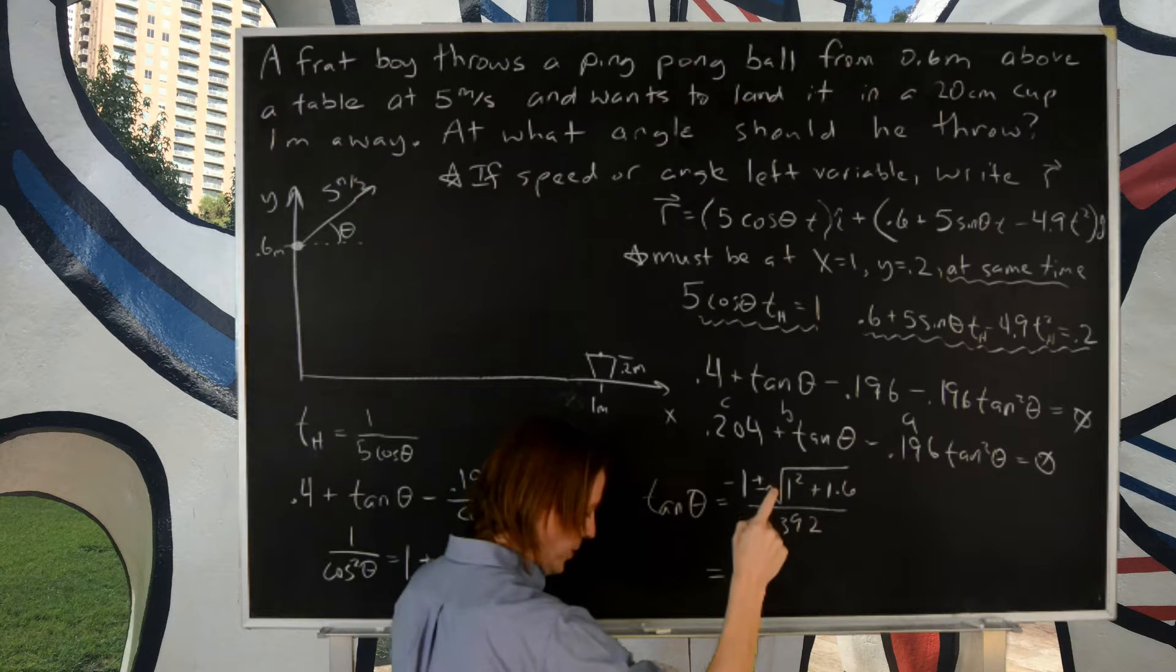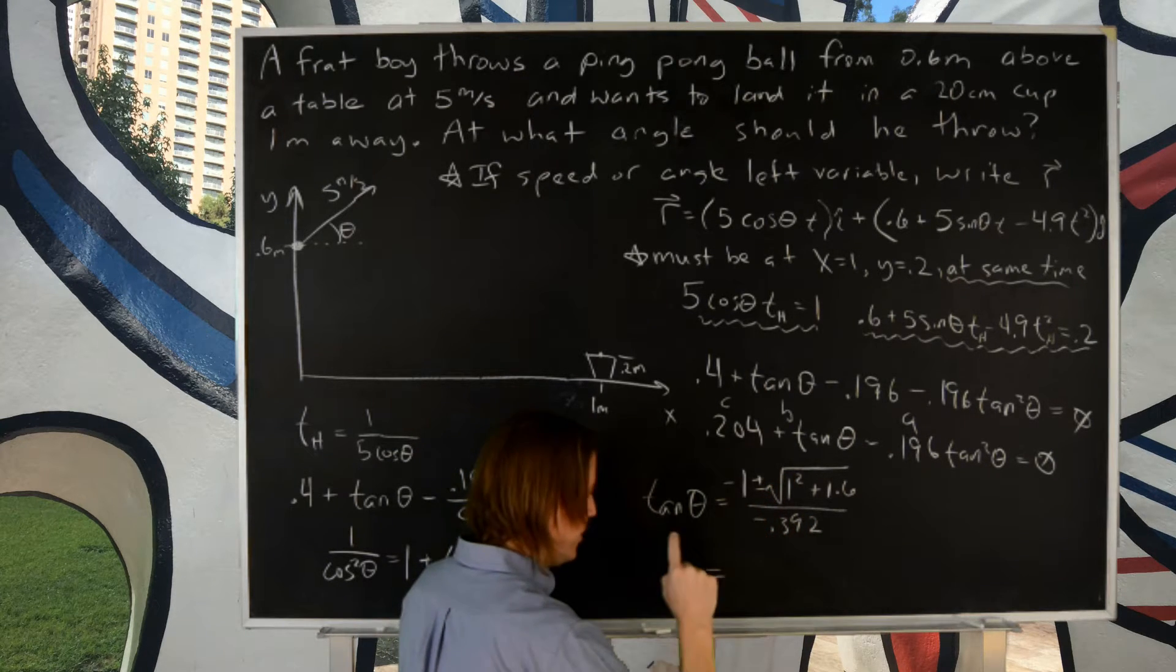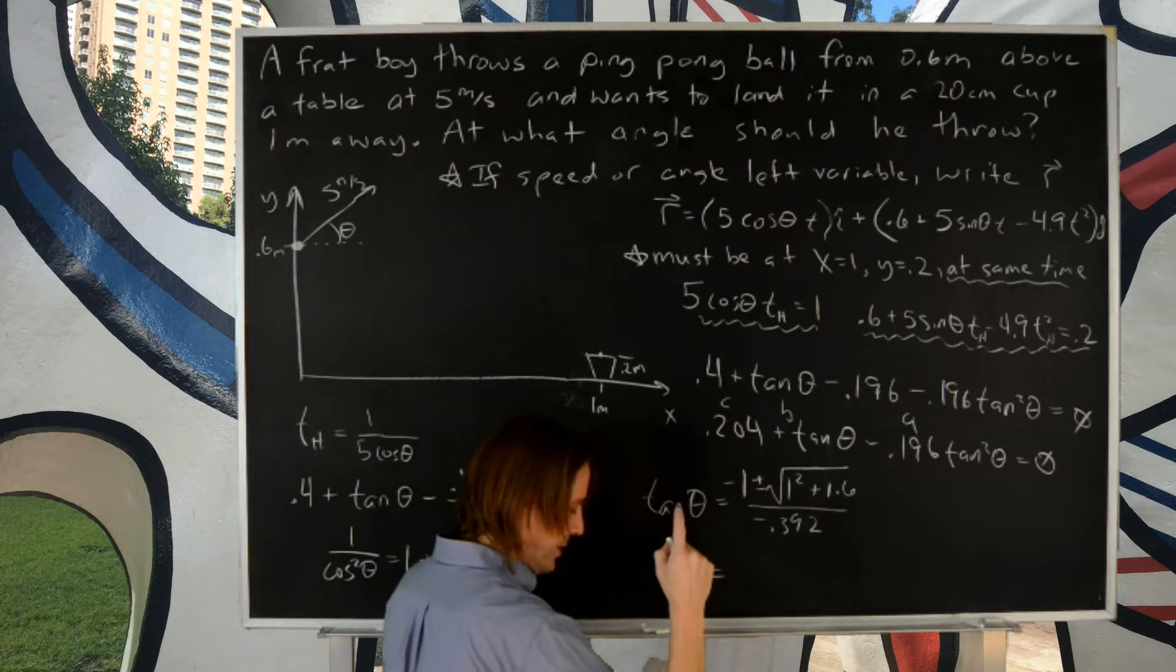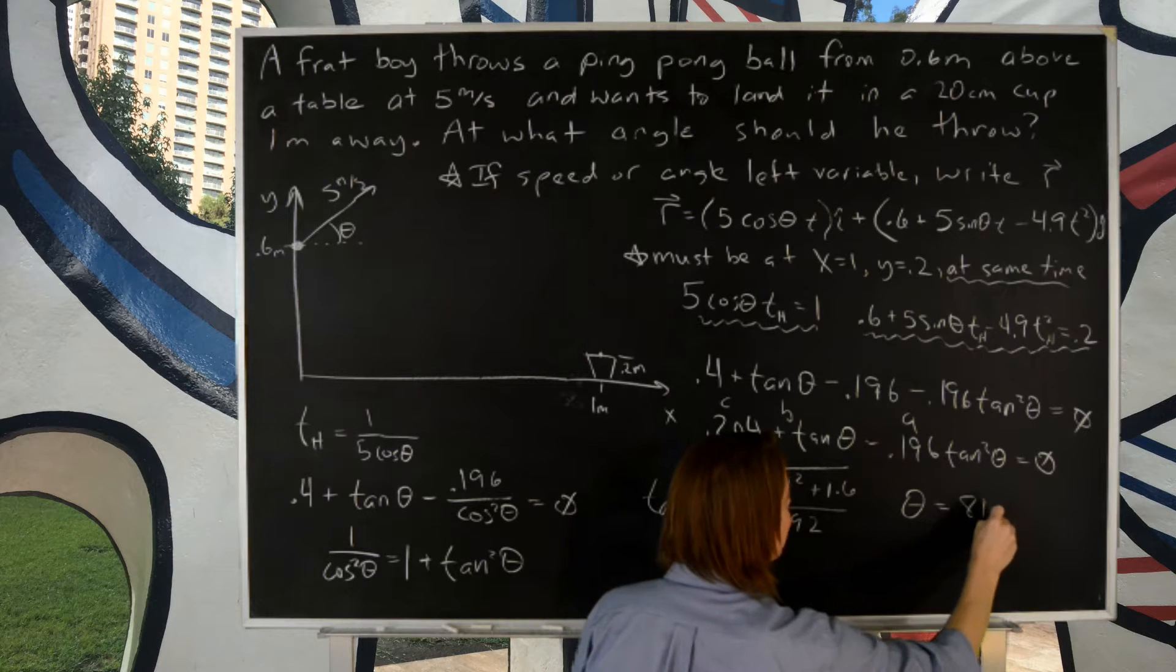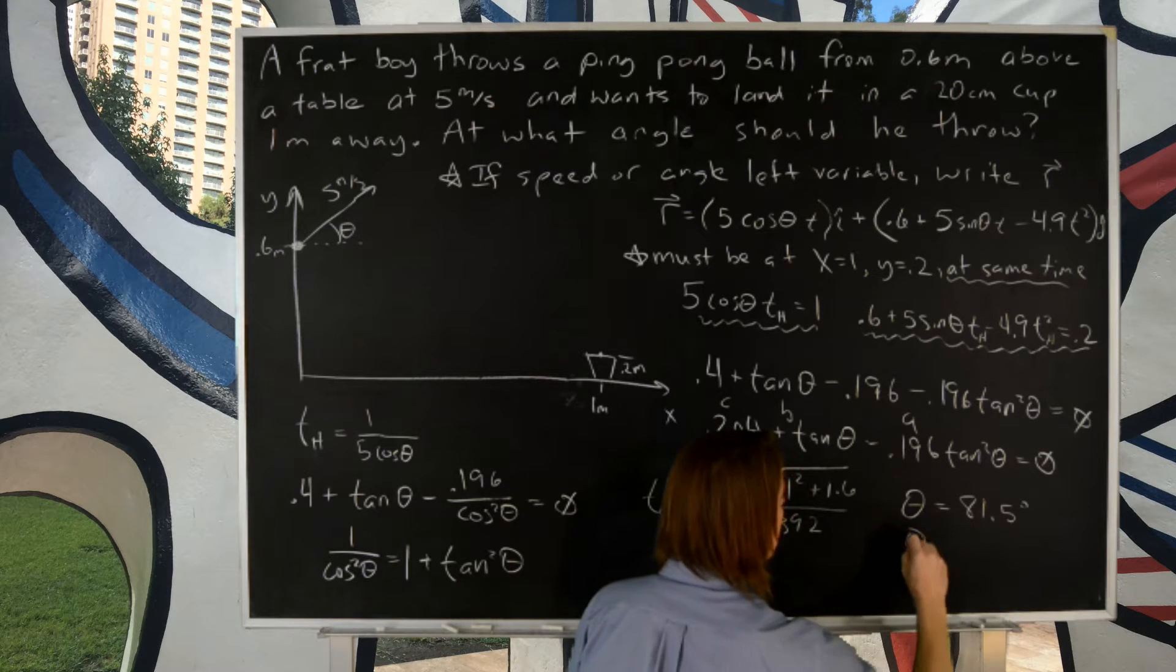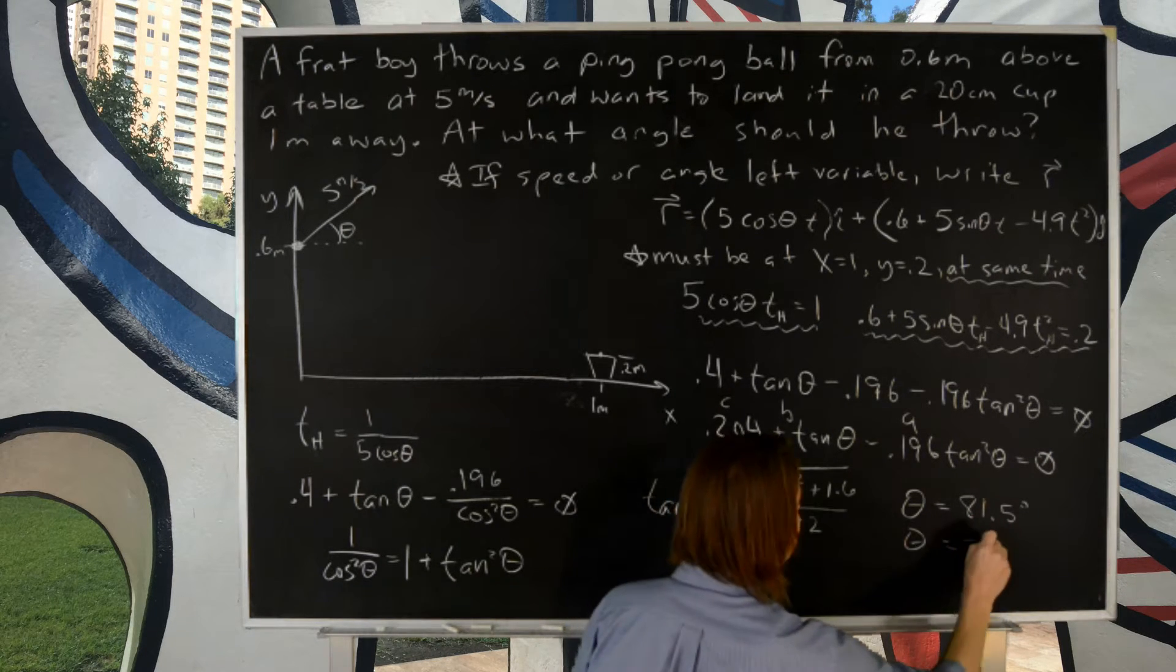You get two roots. It can be two values that I didn't write down, but they lead to two thetas. So theta, you get, can be 81.5 degrees. And then the other one is minus 57 degrees.